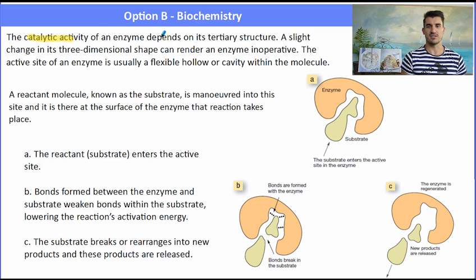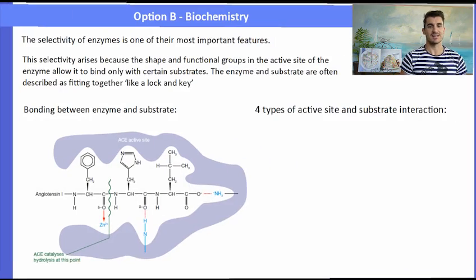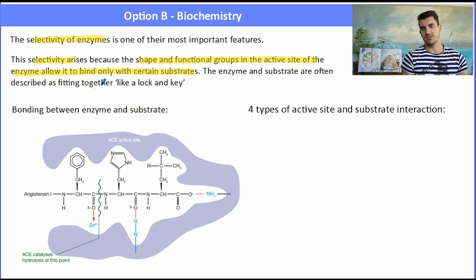So that catalytic activity depends upon the tertiary shape of the enzyme. And any slight change in that shape can render that enzyme inoperative. So a reactant molecule known as the substrate is maneuvered into the site of the enzyme and then there's some interactions that take place. So the substrate needs to have a collision with the enzyme and it needs to enter into the active site. There are some bonds formed between the enzyme and the substrate that lower the activation energy of the reaction. And then the reaction takes place, the products then leave the active site of the enzyme. So that selectivity arises because of the shape and of the functional groups that are present in the enzyme. And those interactions form the lock and the key setup.